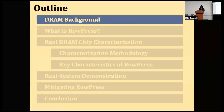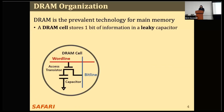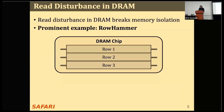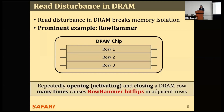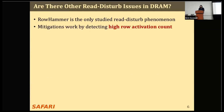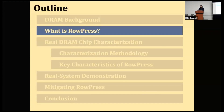Here's the outline of my talk, and I will start with some background on DRAM. DRAM is the prevalent technology for main memory. A DRAM cell stores one bit of information in a capacitor, and DRAM cells are organized into DRAM rows. Read disturbance in DRAM has significant system implications because it breaks memory isolation. A prominent example is RowHammer, where repeatedly activating and closing a DRAM row many times causes bit-flips in adjacent rows. RowHammer is the only studied read disturbance effect, and various mitigations work by detecting high activation counts. This raises the question: what if there's another read disturbance phenomenon that does not rely on high activation counts? We find that RowPress is indeed such a phenomenon.